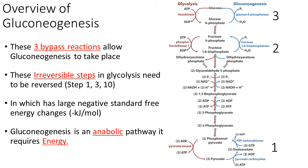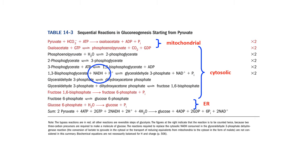Gluconeogenesis is an anabolic pathway and thus requires energy. This table shows the sequential reactions of gluconeogenesis starting from pyruvate, in which the steps in red are of importance.